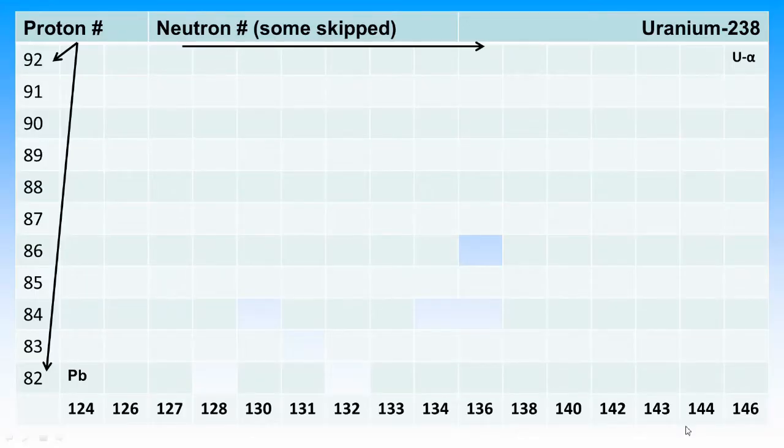This is a simplified chart with uranium-238 in the top right corner and lead-206 in the bottom left corner. The neutron number columns we don't need are skipped.